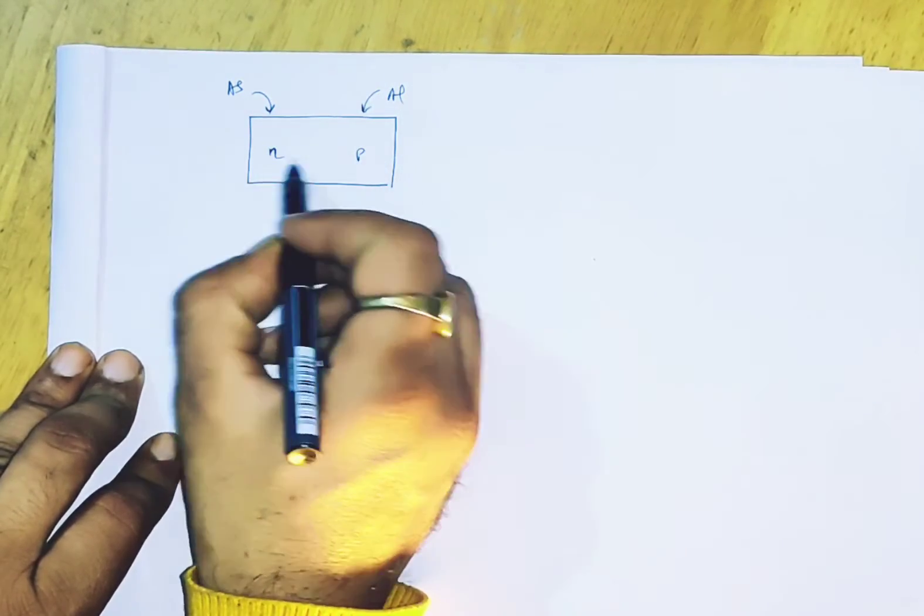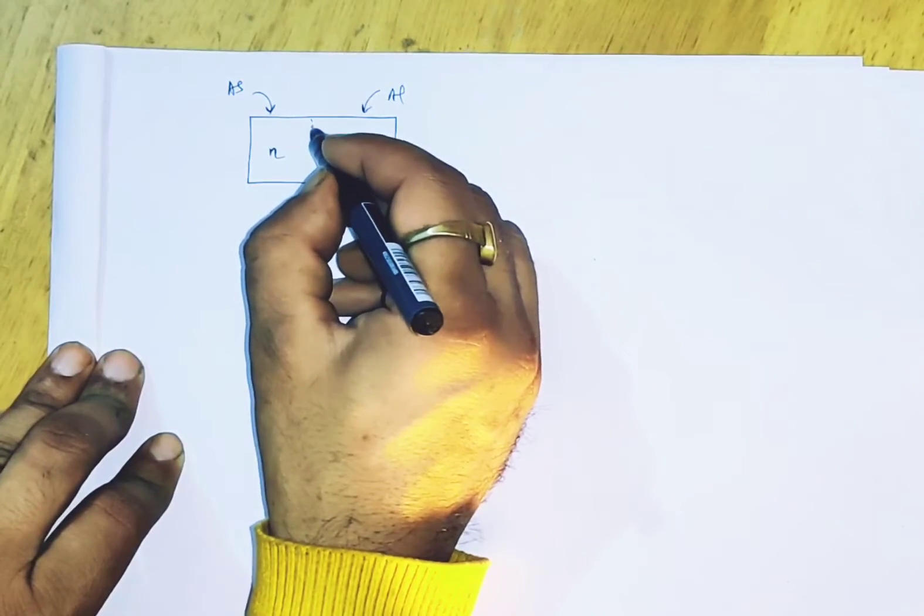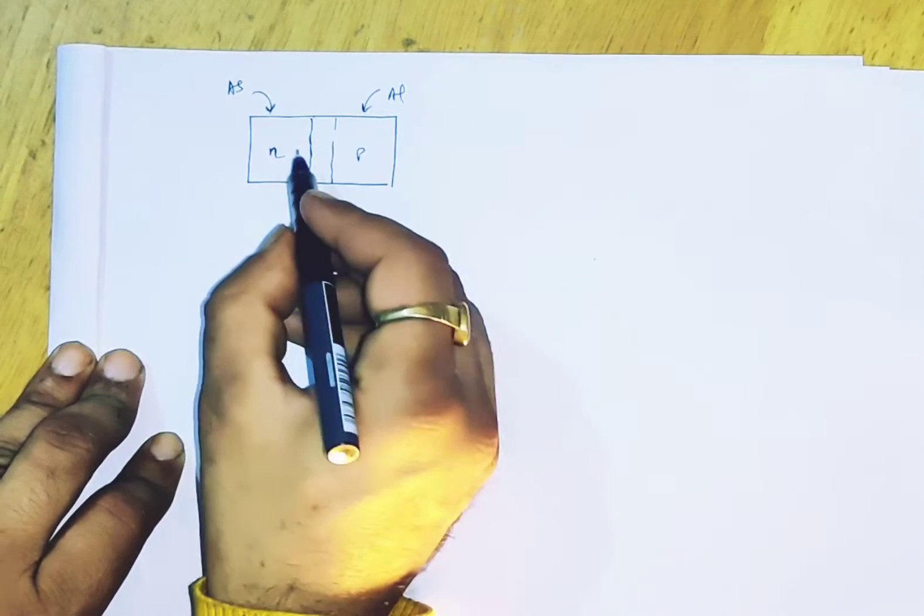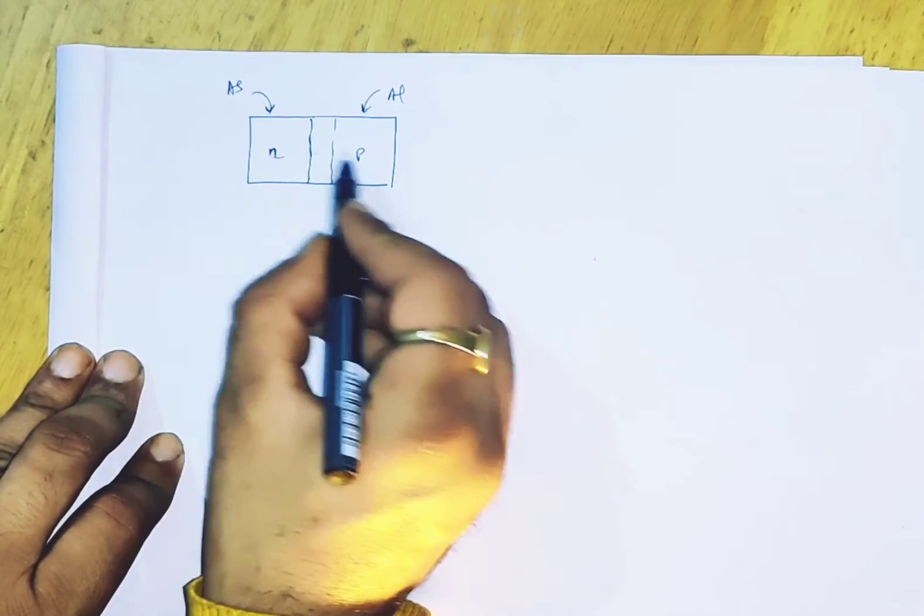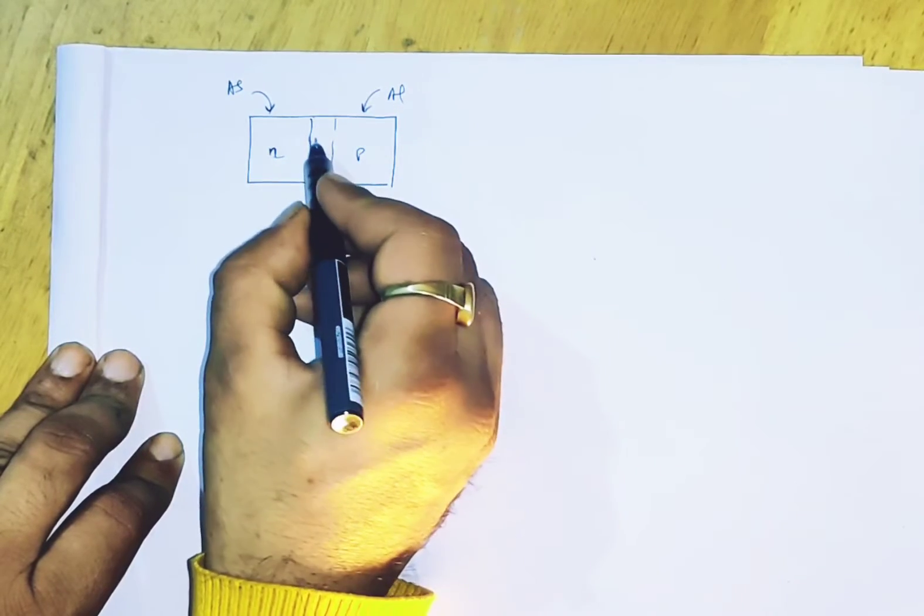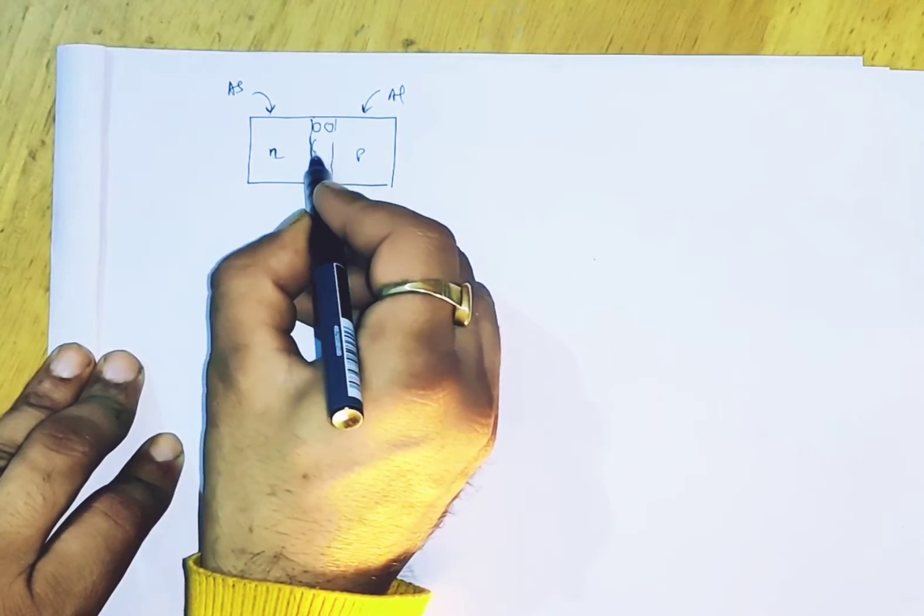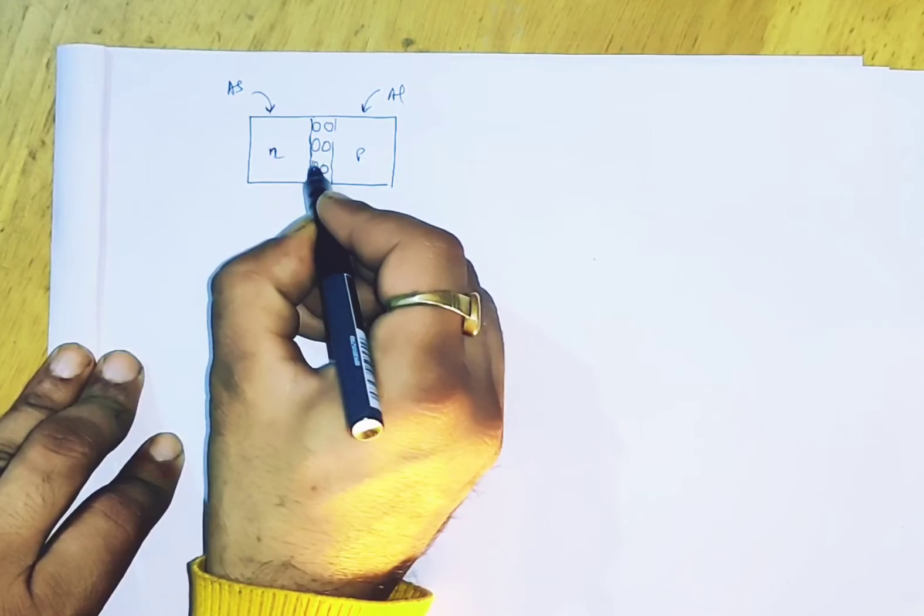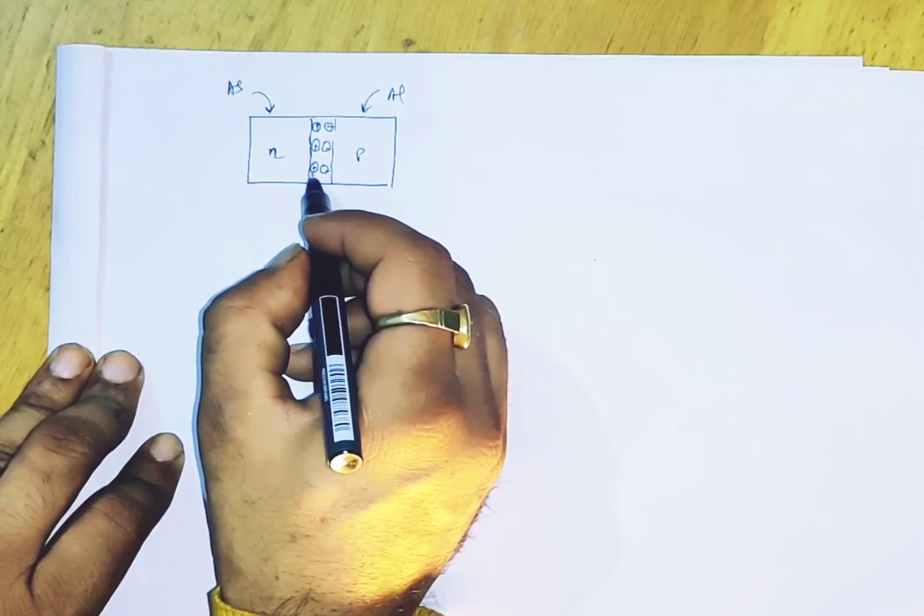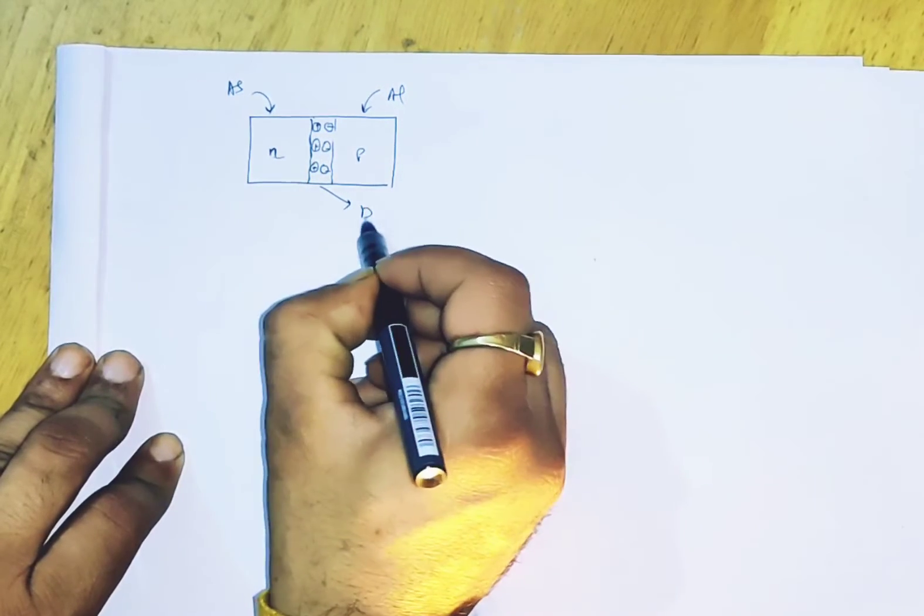Suppose this could merge, in this region the electrons and the holes are already combined and here you can't get any hole or electron. This region is called depletion layer.